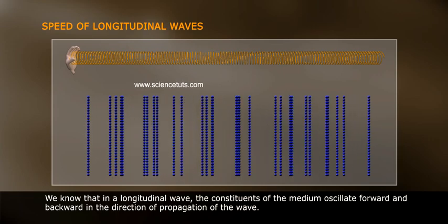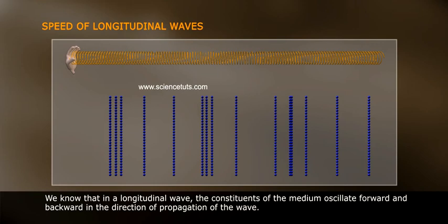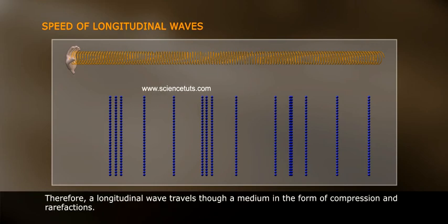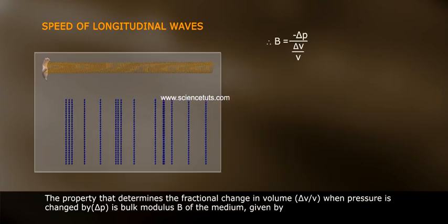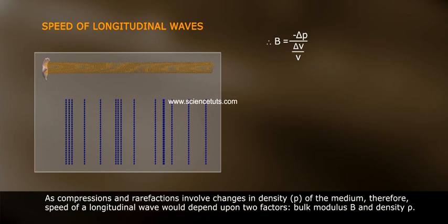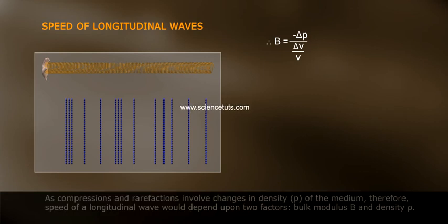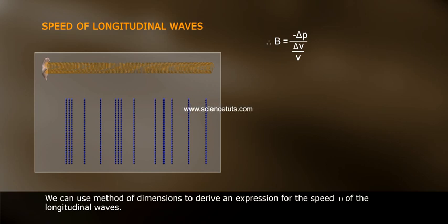Speed of longitudinal waves. We know that in a longitudinal wave, the constituents of the medium oscillate forward and backward in the direction of propagation of the wave. Therefore, a longitudinal wave travels through a medium in the form of compressions and rarefactions. The property that determines the fractional change in volume ΔV/V when pressure changes by ΔP is the bulk modulus B of the medium, given by B = -ΔP/(ΔV/V). As compressions and rarefactions involve changes in density ρ of the medium, the speed of a longitudinal wave would depend upon bulk modulus B and density ρ.